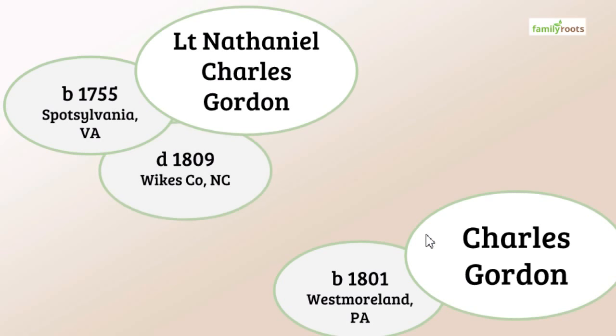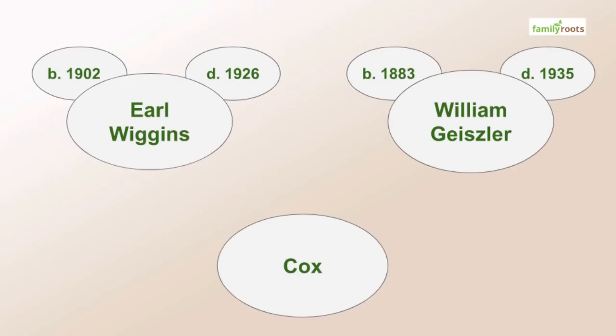these two individuals do not look like they intersect and therefore I can't create any kind of connecting line, and to me, that lets me know that these individuals don't belong together. In another case study that I have, I talk about Earl Wiggins and William Geisler and somebody named Cox,